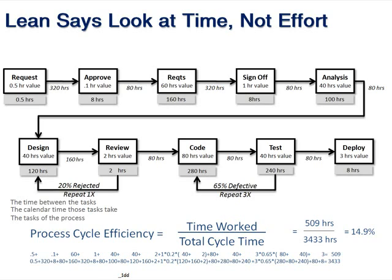That's what we mean by flow. So how do we improve flow while starting where we are? The first thing we need is some visibility into it. Here I've got what I call a simple value stream map that looks a bit like a waterfall. It's actually a flow chart where we're looking at time. You'll see we have request, approve, requirement, sign-off, analysis, design, review, code, test, deploy — those are the steps we're doing.